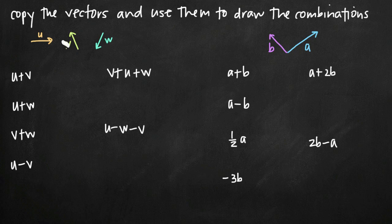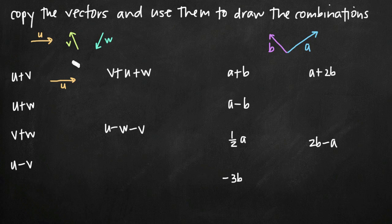So here's what that's going to look like. We have u, v, and w — an orange, a green, and a blue. They want to know what u plus v is going to look like. I start with u and add v, so I'm going to copy u exactly as it is. I'll draw it here and label it, drawing it exactly the same as the original vector u.